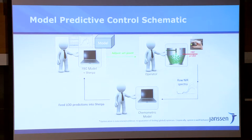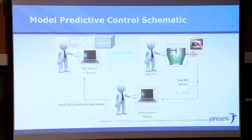In the end, this becomes model predictive control. We have the model. On the right at top, we have near-IR measurements that give us the moisture content directly. We use chemometric models to translate near-IR spectra to actual concentrations. We return that to the Sherpa model, which tells us where you are, where you should be, and what is your control action. That then goes back to the operator to do. We're still doing it open loop like this.